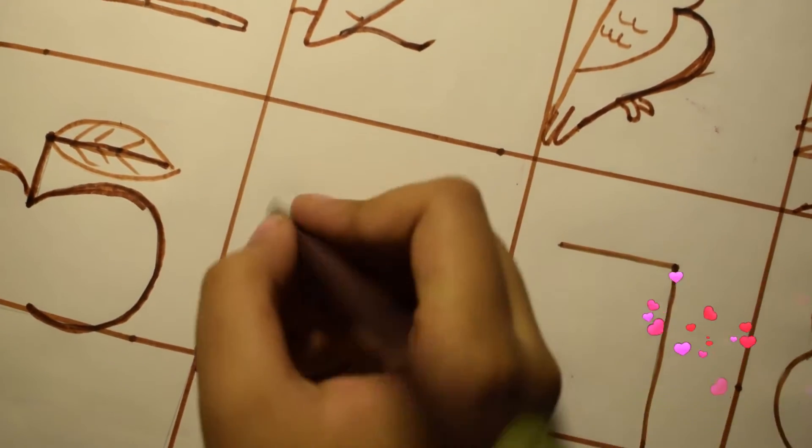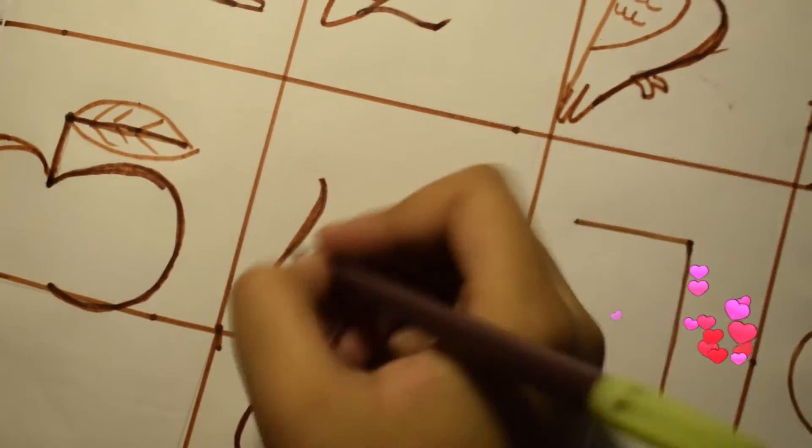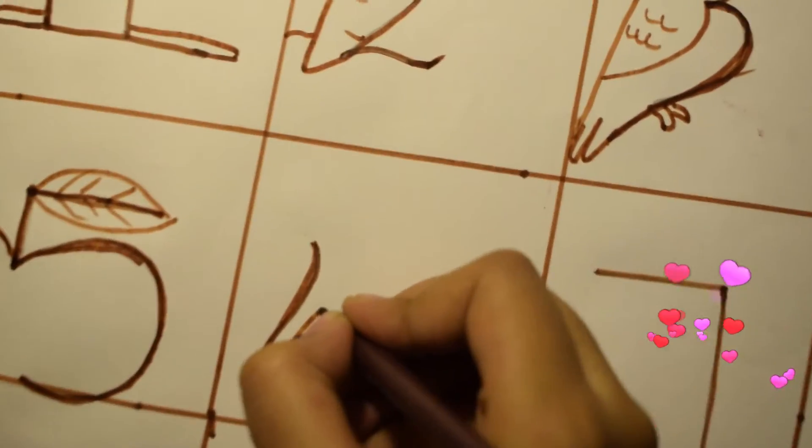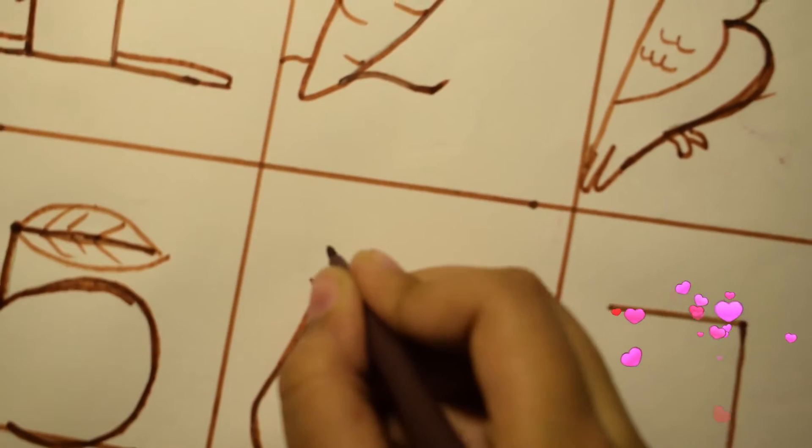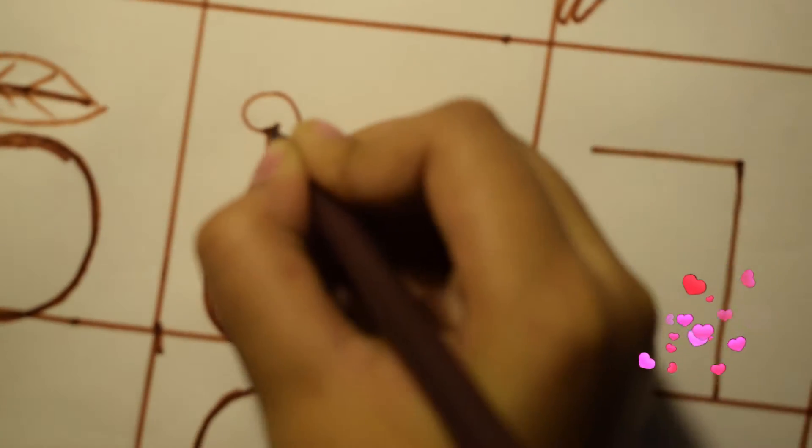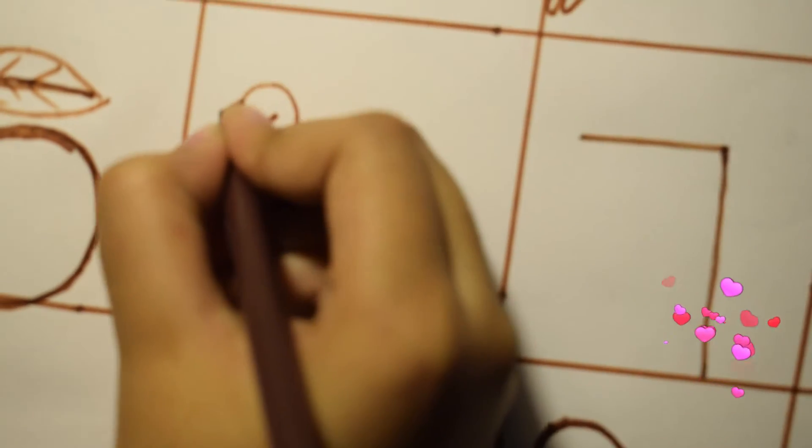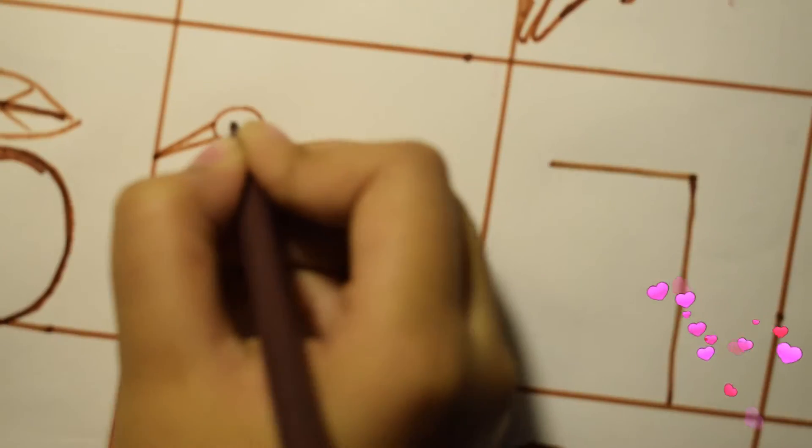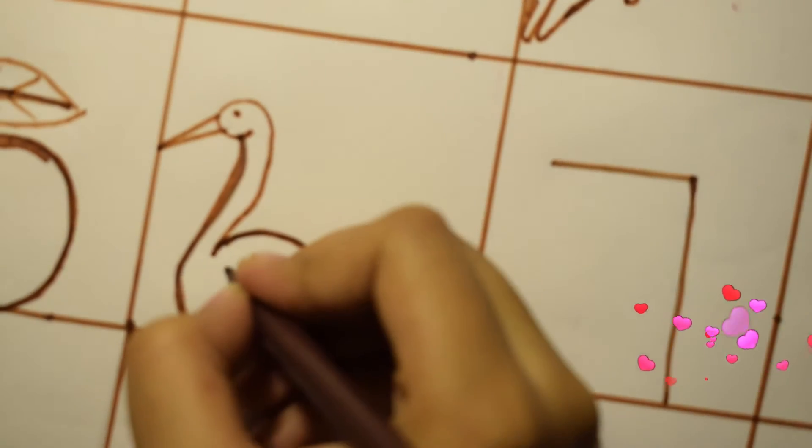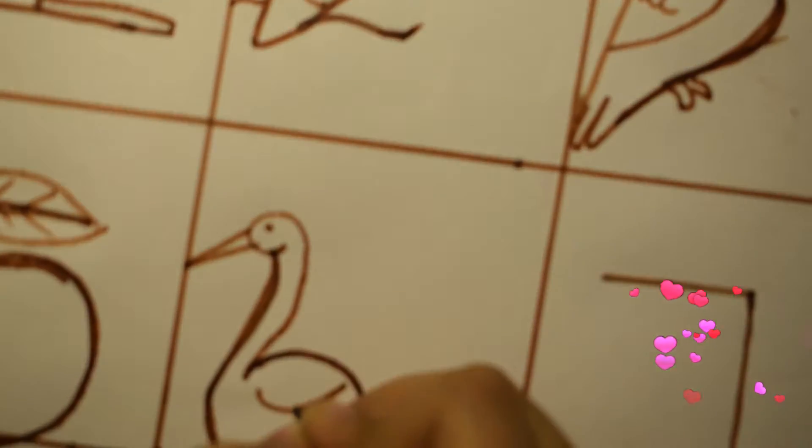We'll make it a flamingo. So let's get this up and round it over here. A big beak, an eye, and a small wing. Wow.